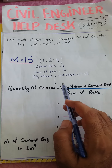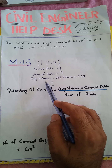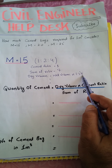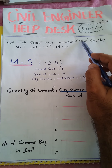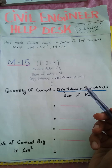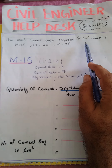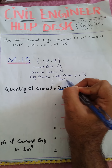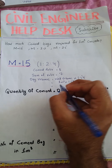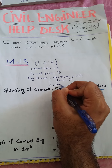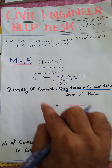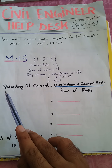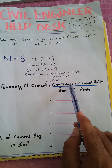Another value we need is the dry volume. Dry volume is equal to the wet volume of concrete multiplied by 1.54. The wet volume is actually the volume of concrete — since we are working for 1 cubic meter, the wet volume is 1 cubic meter. Multiplying by 1.54, we get a dry volume of 1.54 cubic meters.